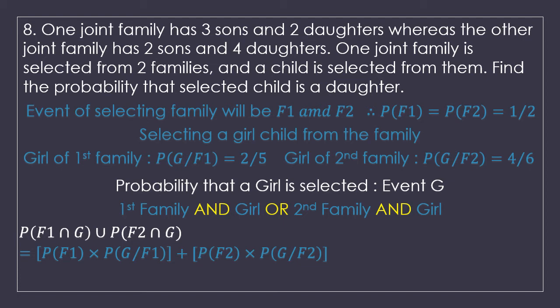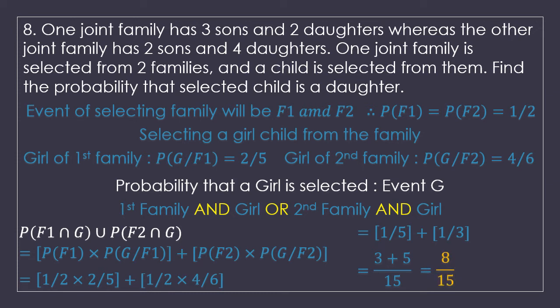Putting in the values: 1 upon 2 multiplied by 2 upon 5, plus 1 upon 2 multiplied by 4 upon 6. The first term simplifies to 1 upon 5 and the second to 1 upon 3. Taking LCM of 15: 3 upon 15 plus 5 upon 15 gives 8 upon 15. So the probability that a girl is selected when a family is selected and then a child is chosen from that family is 8 upon 15.